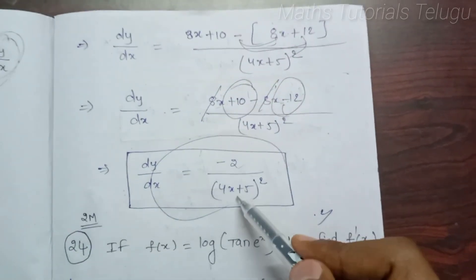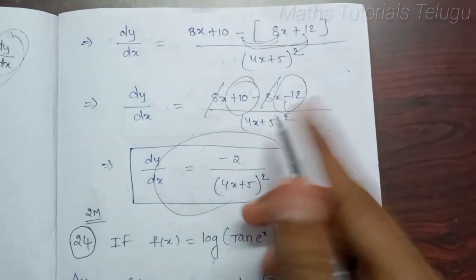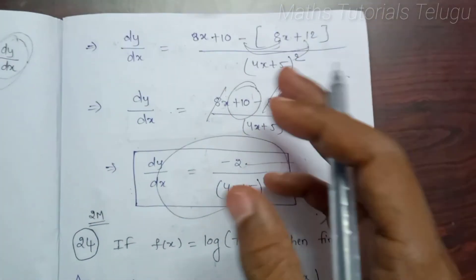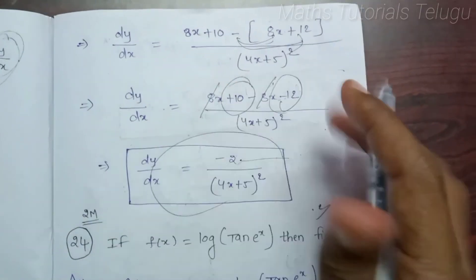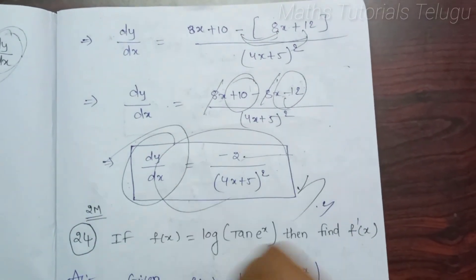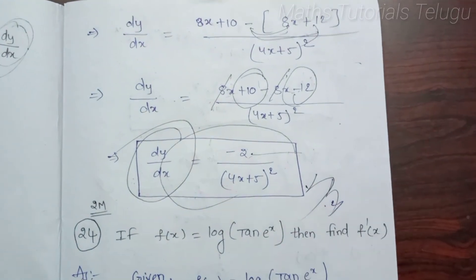Now check that and verify. You can also substitute a value of x to verify. This is dy by dx — the final answer.